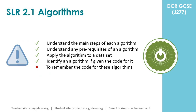The GCSE specification states that you must be able to understand the main steps of each algorithm, understand any prerequisites of an algorithm, apply the algorithm to a dataset, and identify an algorithm if given the code for it. However, you're not required to remember the code for these algorithms.